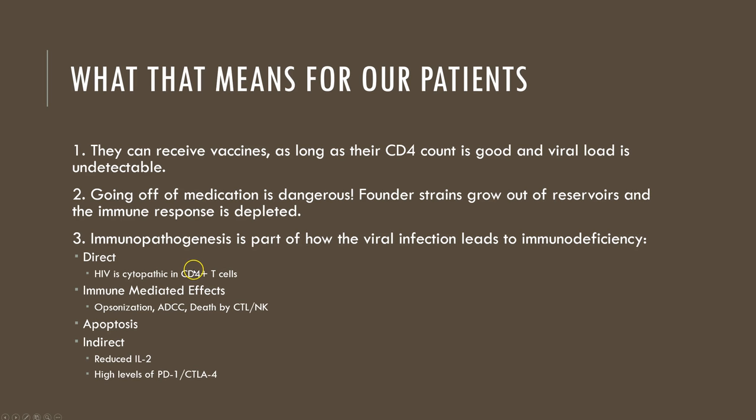HIV-infected CD4 positive T cells also die by apoptosis. As the immune response becomes more and more dysregulated, we see indirect effects — for example, lack of IL-2 means we're not going to grow CD4 T cells. Additionally, CD8 T cells start expressing very high levels of exhaustion and anergy markers like PD-1 and CTLA-4, indicating that even though they're present, they're not doing anything.